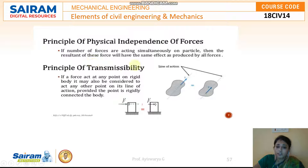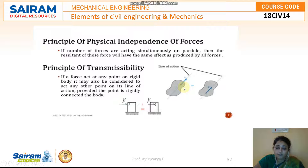The principle of transmissibility means that a body is having a force at a point — you can see two points. If a force acts at any point on a rigid body, it may also be considered to act at any other point on the line of action, provided the point is rigidly connected to the body. A force acting at one point can be transmitted along the same line of action.